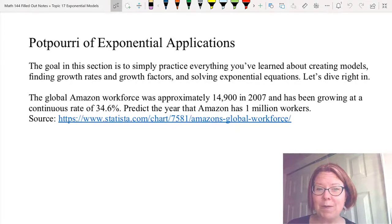We'll start with the problem about Amazon. The global Amazon workforce was approximately 14,900 in 2007 and has been growing at a continuous rate of 34.6%. We want to predict the year that Amazon has 1 million workers.